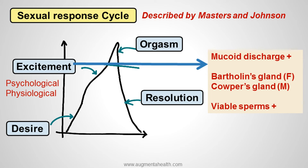Mucoid discharge is typically seen in the phase of physiological excitement. The main components of the mucoid discharge come from the Bartholin's glands in females as well as the Cowper's glands in males. One very important point to remember is that this discharge could sometimes contain viable sperms.